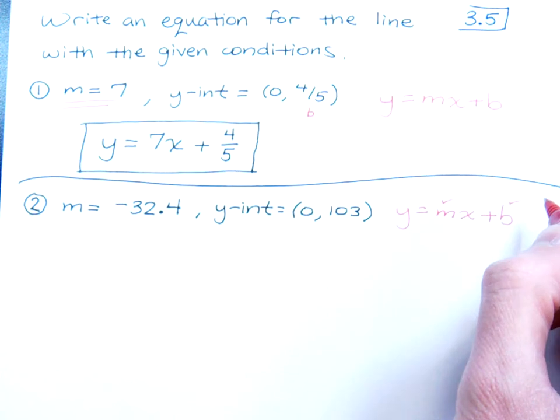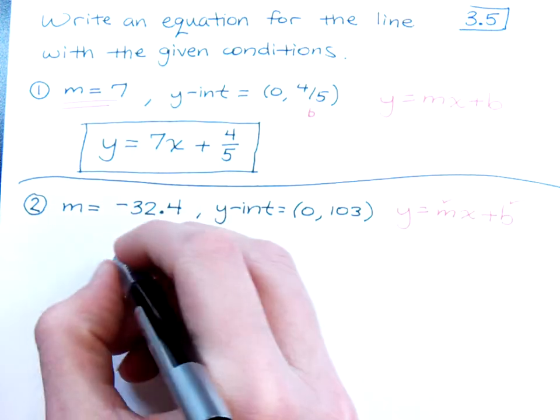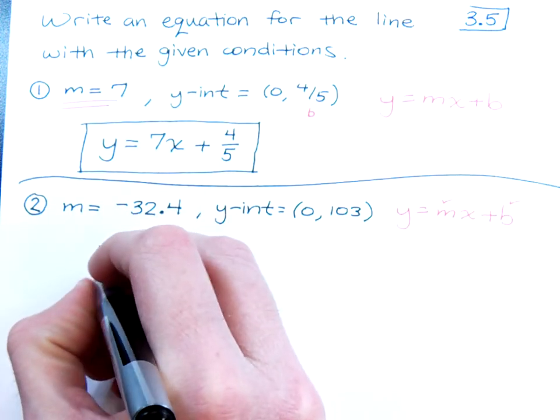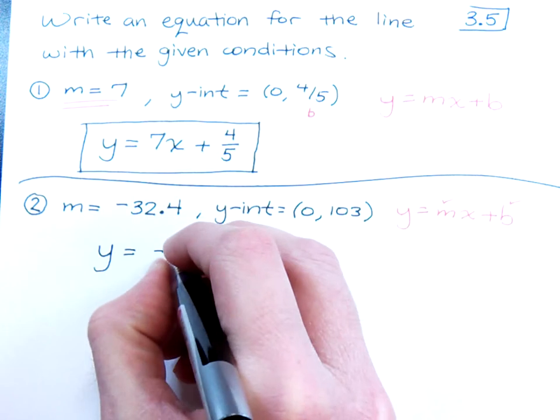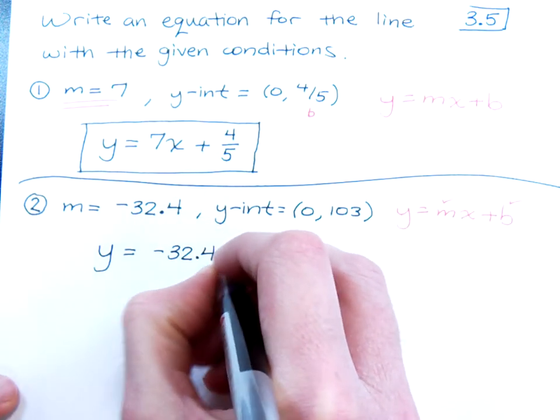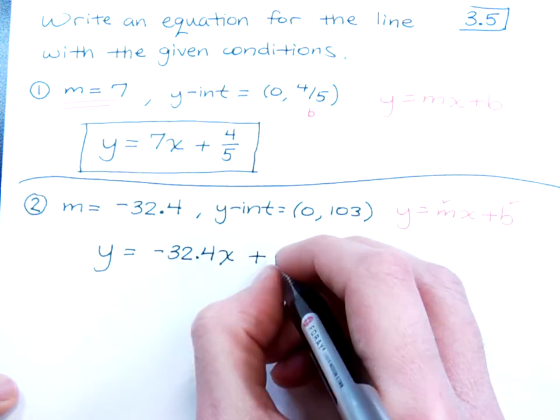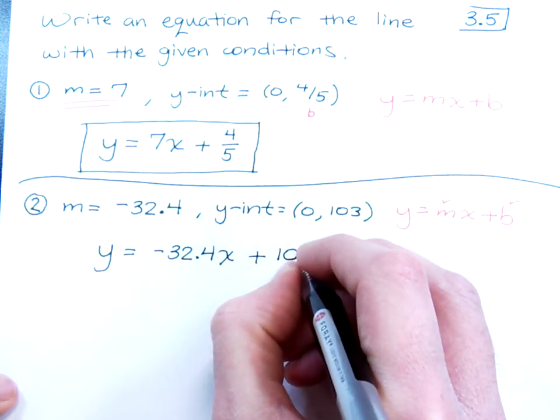You've got your slope, and you know the y-coordinate for your y-intercept. So it's just a matter of plugging into the formula, and you're going to have y equals negative 32.4x plus the y-coordinate for your y-intercept. That's going to be 103.